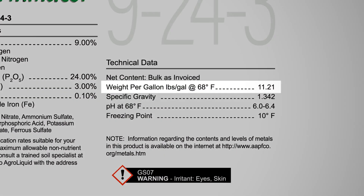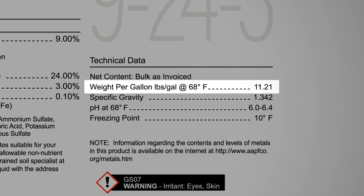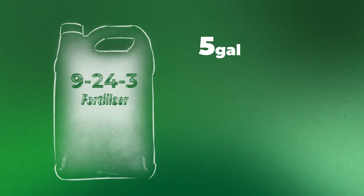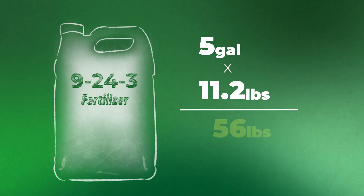Now let's go a different direction and take a look at liquid fertilizer. Say I had a liquid fertilizer with an analysis of something like a 9-24-3 — help me break that down. The first thing we need to figure out is our pounds per gallon, so we're adding an extra step. In this instance, a 9-24-3 is going to weigh 11.21 pounds per gallon — and we find that on the label of any liquid product. So we multiply 11.2 pounds by 5 gallons, and we're looking at 56 pounds of product.